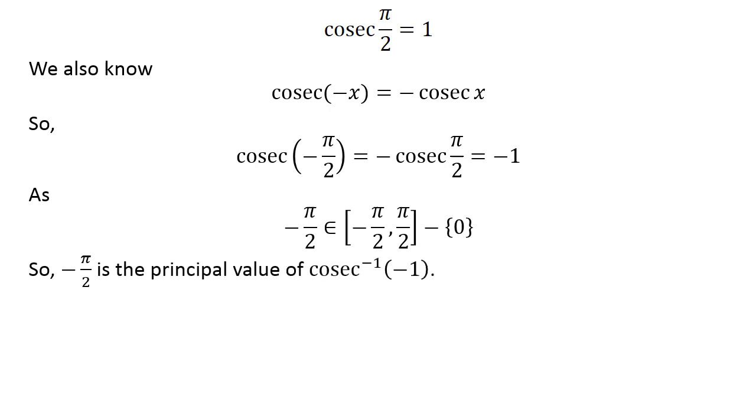So, minus half of pi is the principal value of inverse of cosecant of minus 1.